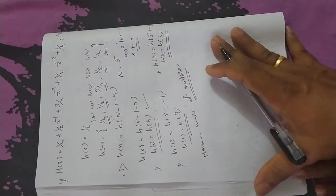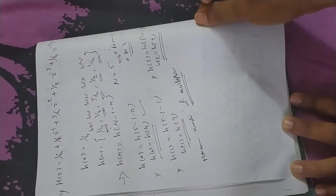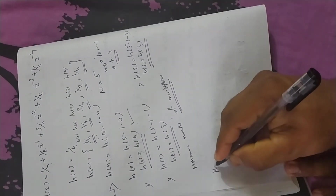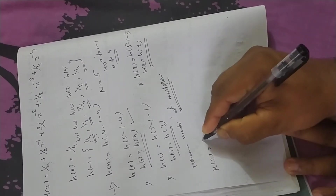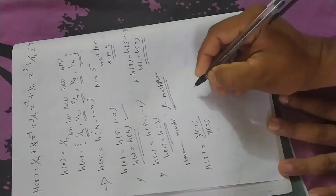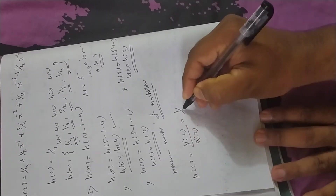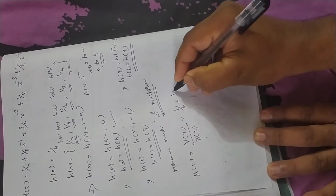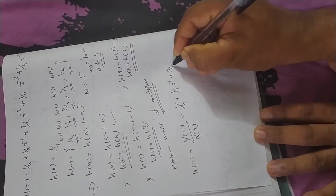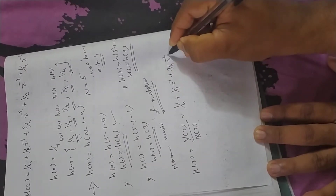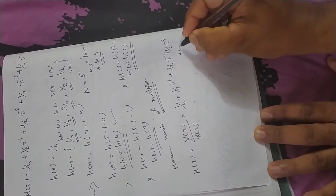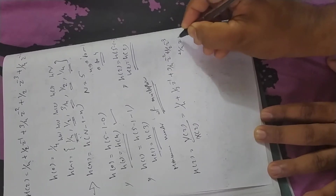Let's do this. We have done this particular problem. H(z) official will be equal to Y(z) by X(z). The answer is: 1/4 plus 1/2 z-inverse plus 3/4 z raised to minus 2 plus 1/2 z raised to minus 3 plus 1/4 z raised to minus 4.